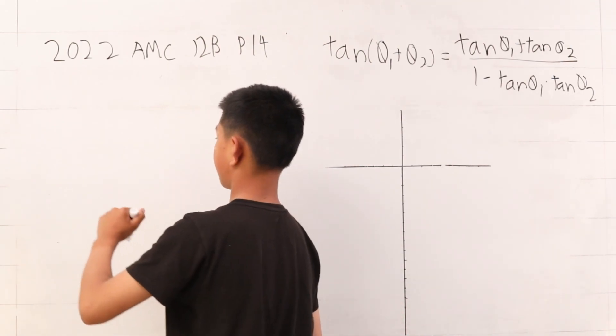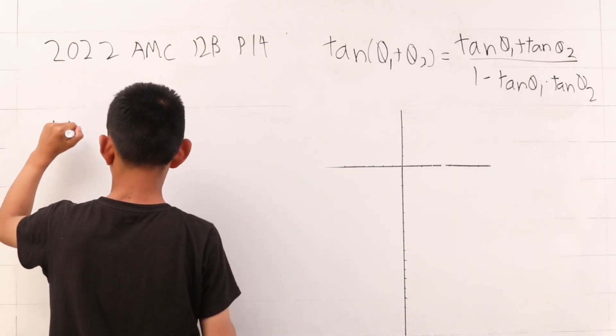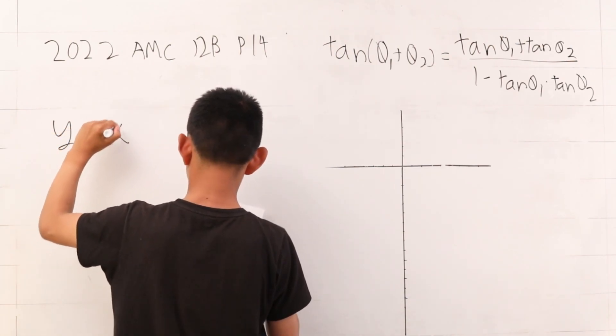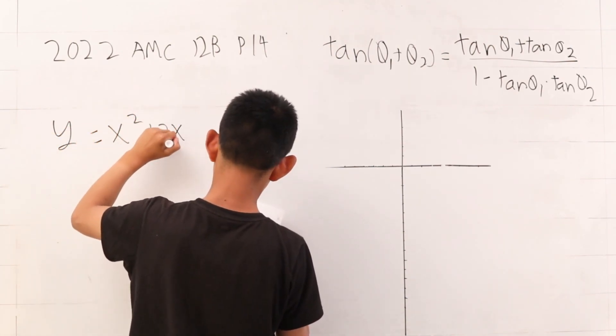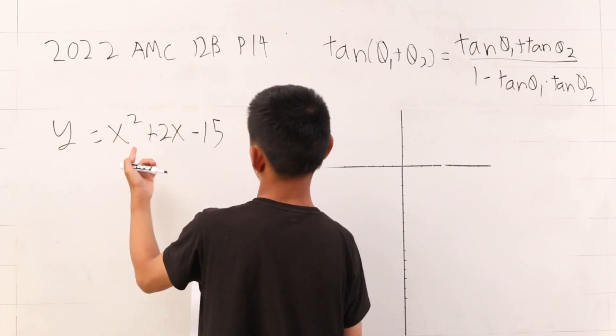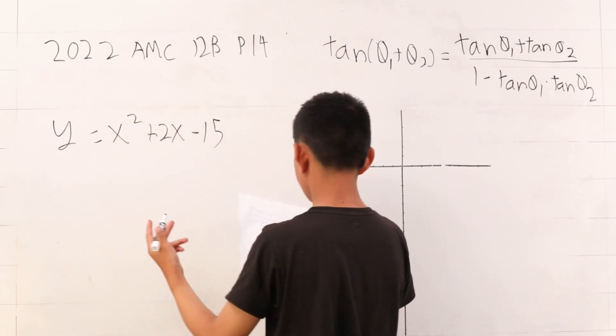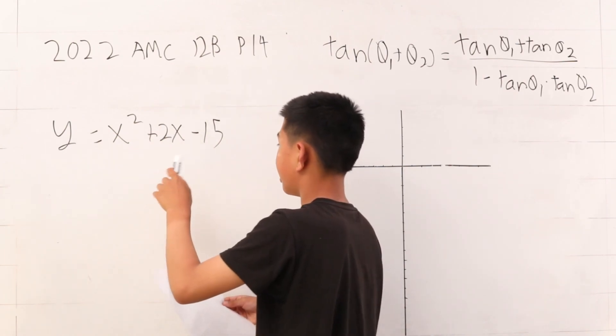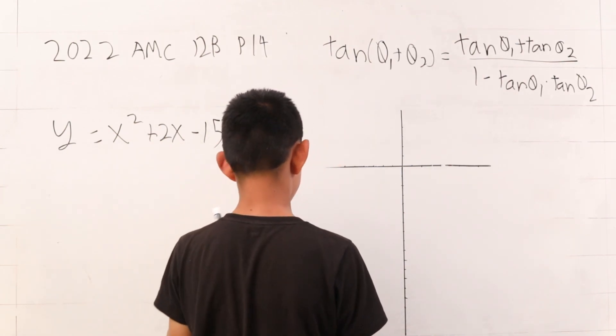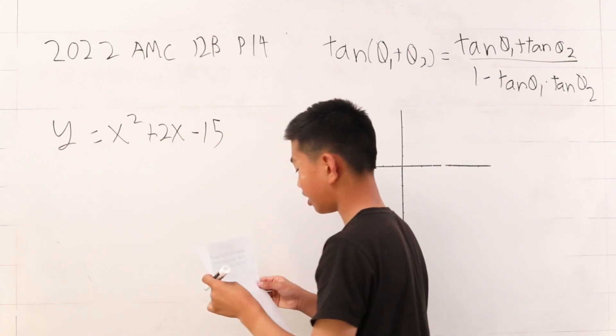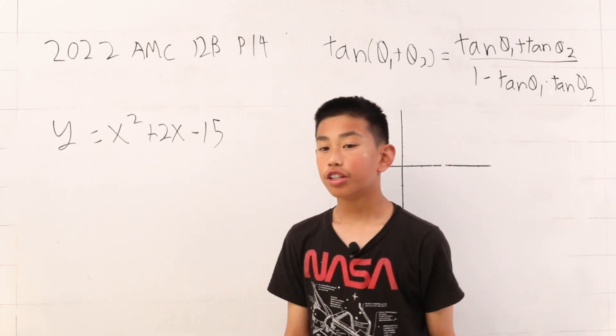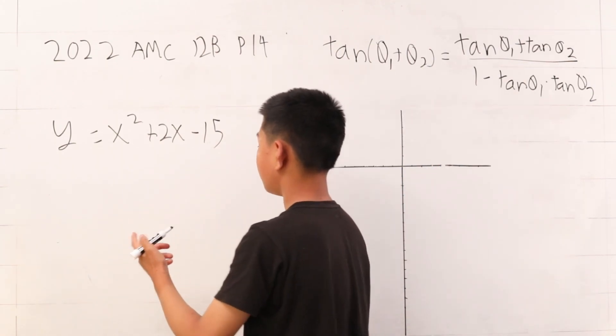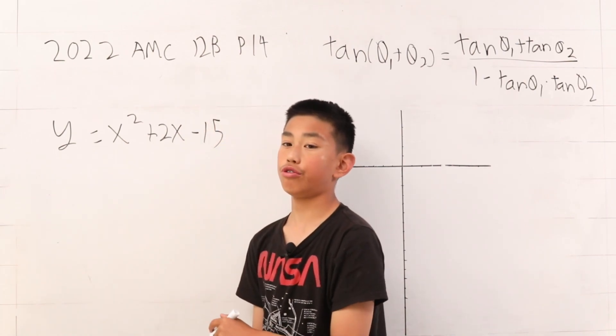Basically, what they're saying is we have a formula, y is x squared plus 2x minus 15. This is a formula for a graph here. So we are given that this formula intersects the x-axis two times and the y-axis one time. So the thing is, we have three points to plot here. We need to find those three points.